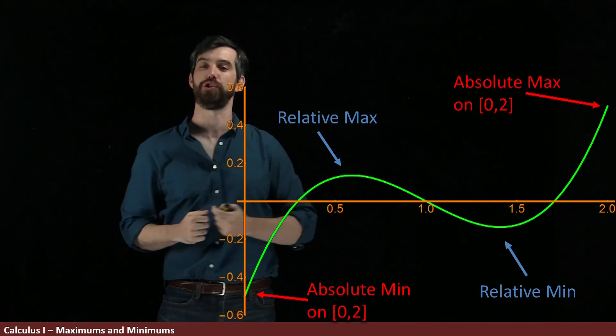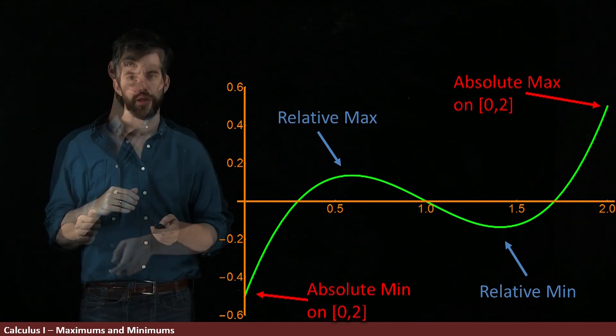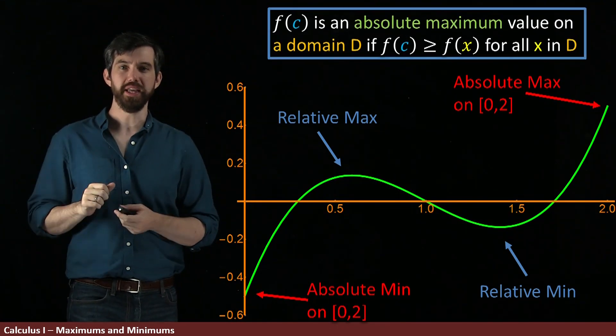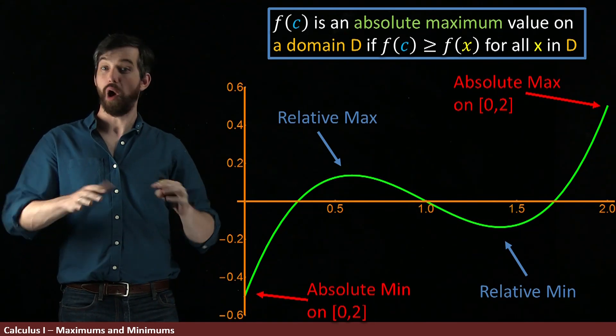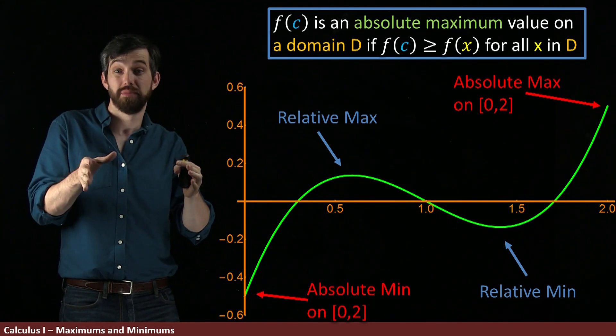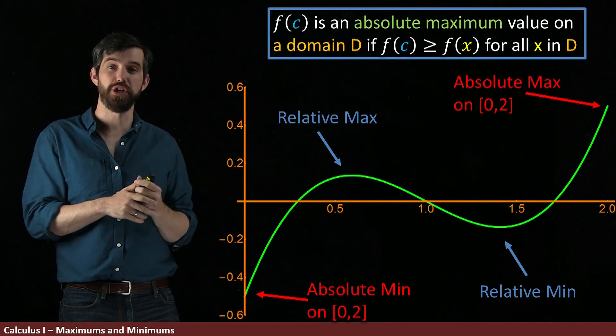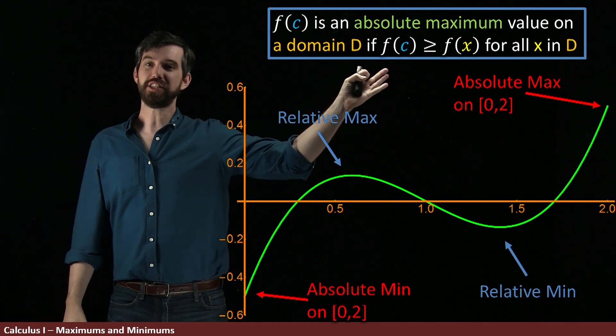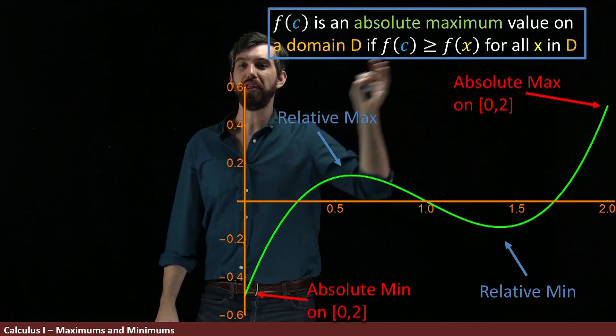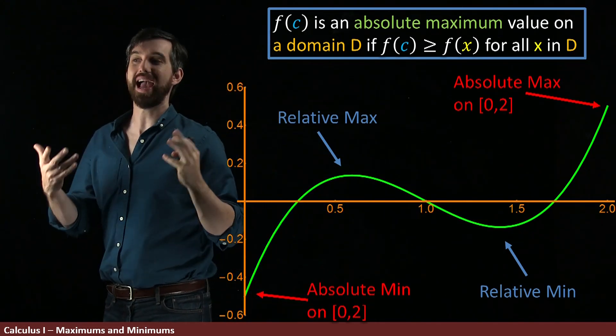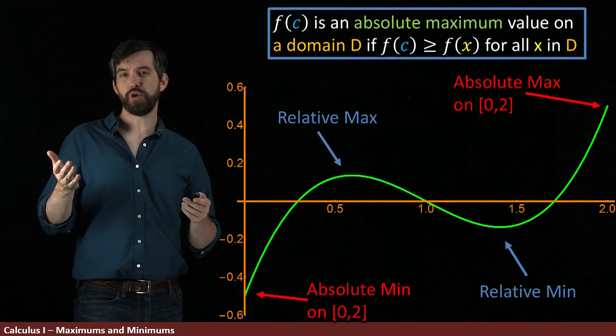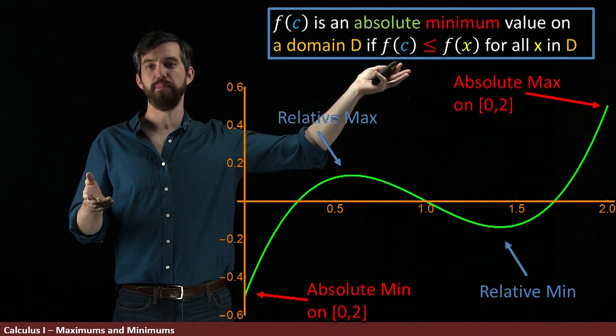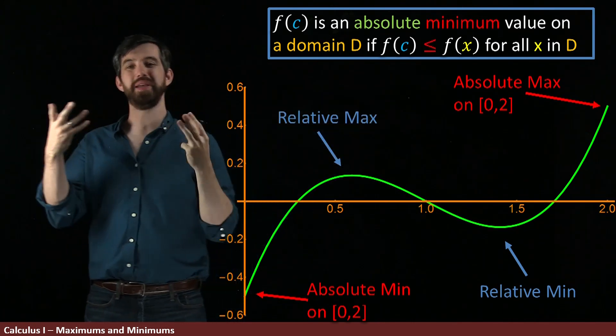We can define this formally by saying that f of c is going to be an absolute maximum on some particular domain—here the domain is the 0 up to 2—if f of c is bigger than all the other f of x is for every other x in the domain, in this case the 0 to 2. And then of course we could change it from maximums now to minimums, where I change the sign and we get the exact same thing.